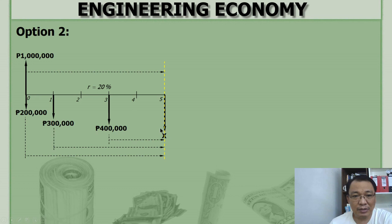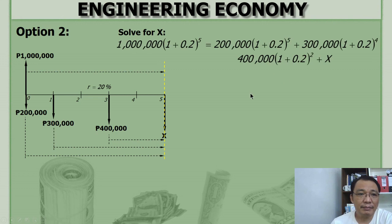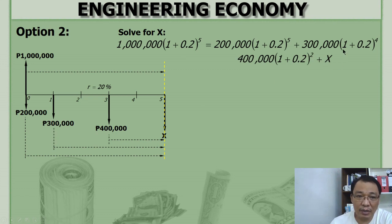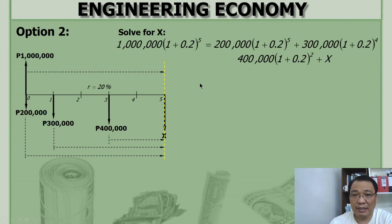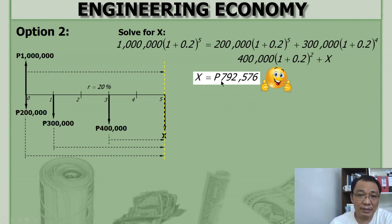Since the movement is forward, the exponent is positive. So: 1,000,000(1+i)^5 equals 200,000(1+i)^5 plus 300,000(1+i)^4 plus 400,000(1+i)^2 plus X. The 300,000 needs four periods (from year 1 to year 5), the 400,000 needs two periods (from year 3 to year 5), and X has no factor since it coincides with the focal date at year 5. Solving gives the same answer: X equals 792,576.